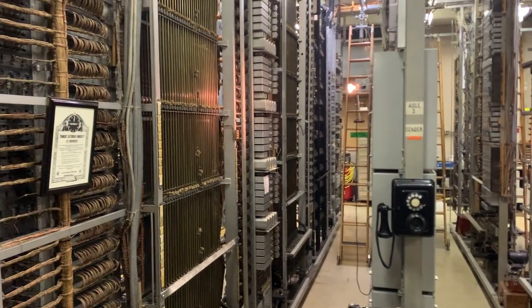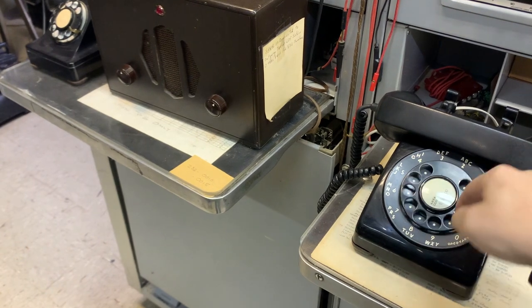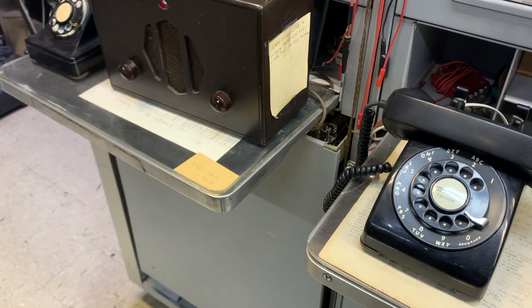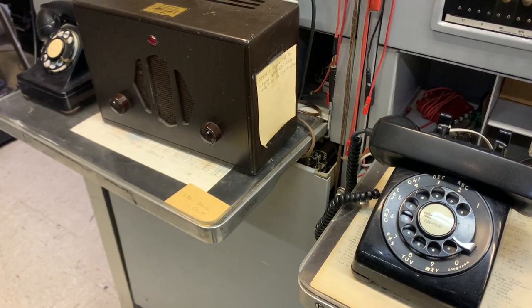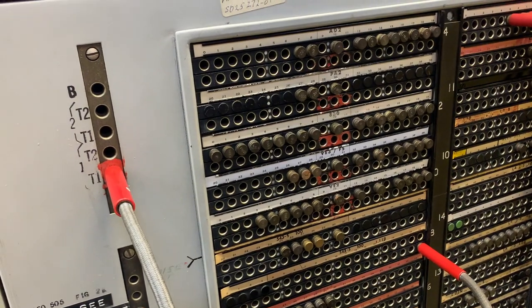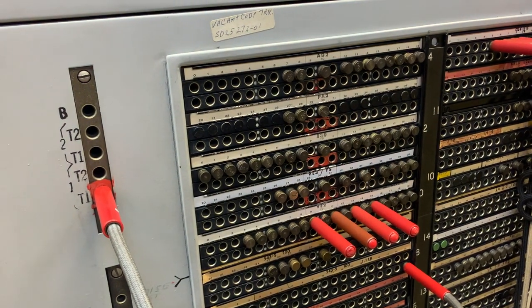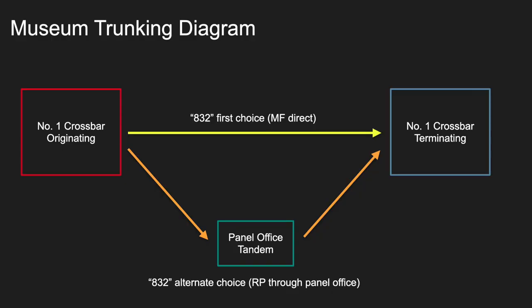The number one crossbar marker was designed to address this problem. If we place a call to 832, we expect the number one to outpulse MF to the terminating office. But I'm going to make all the 832 trunks busy by inserting busy plugs in these jacks. This means 832 calls can't get through by the usual direct route, but that's no problem, because the marker recognizes the all-trunks-busy condition and performs a route advance to another trunk group specifically set up for this purpose. The trunking layout of the museum is designed so that the number one crossbar's alternate routes are served through the panel office as an intermediate point, and at the panel office, there are trunks that come right back to the crossbar's terminating half, allowing the call to complete normally. Let's listen to the call.